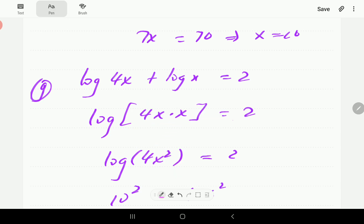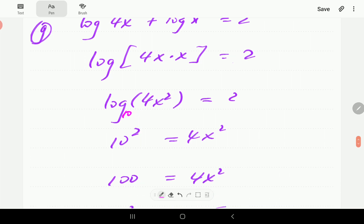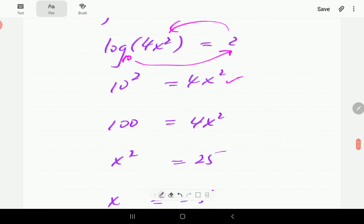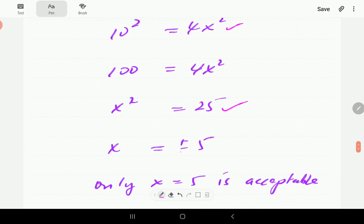So the base is 10. So this is telling us that 10 to the power of 2 is equal to 4x squared. Dividing through by 4 is telling us that x squared must be equal to 25, and so x is plus or minus 5.